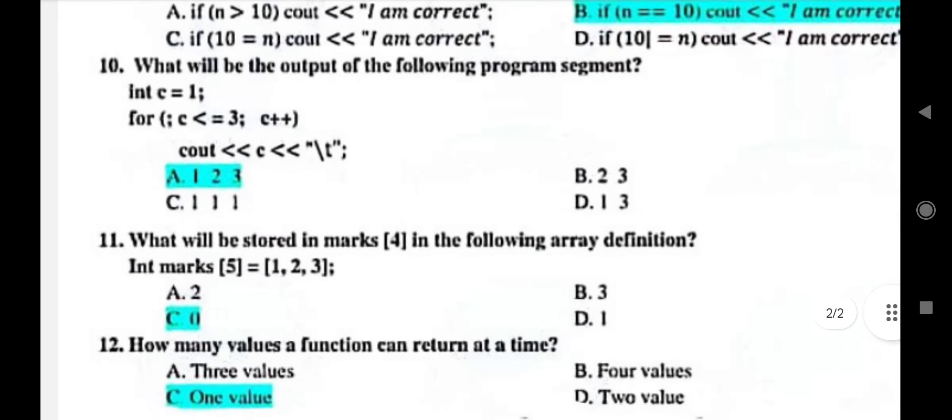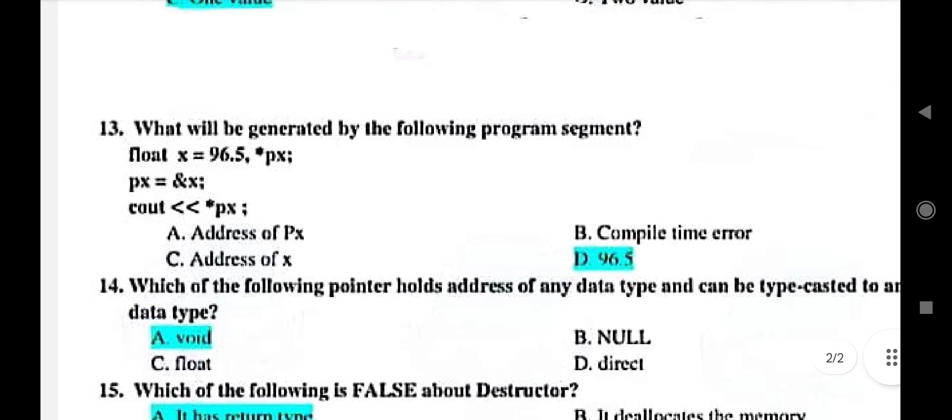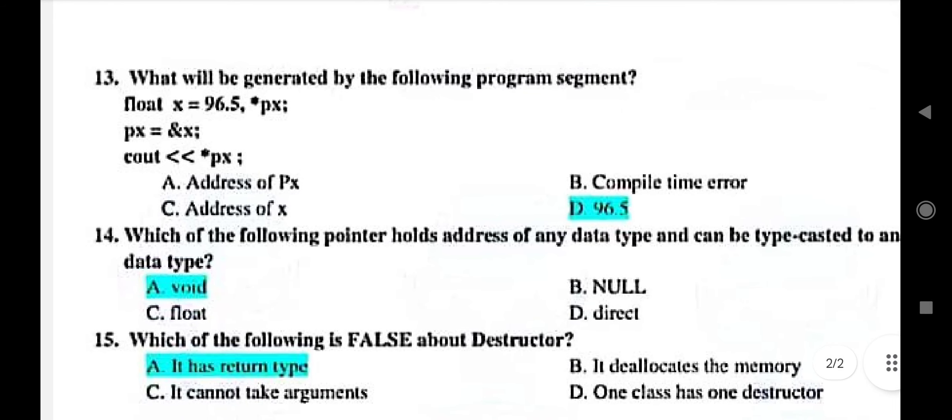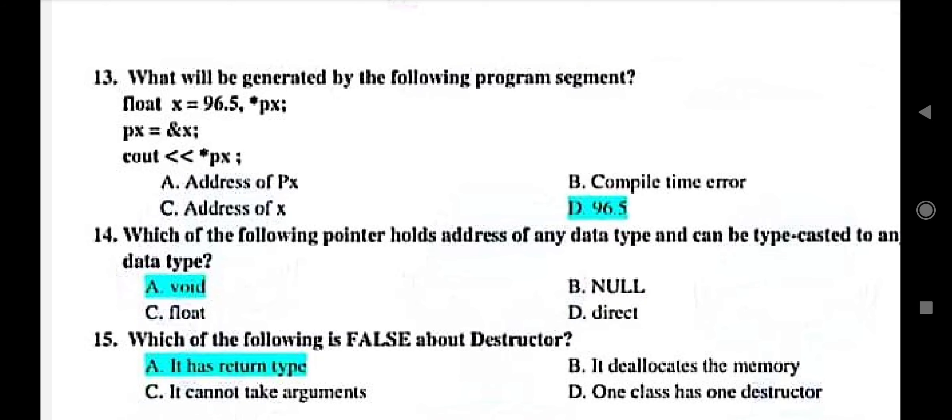Then next we go to question number 13. What will be generated by the following program segment. So this correct option was 96.5.